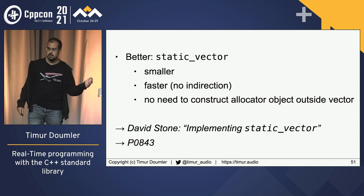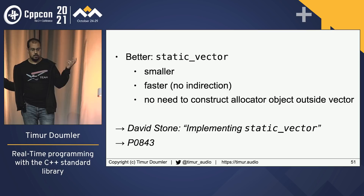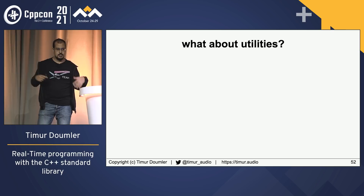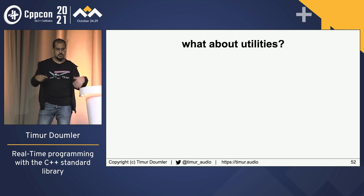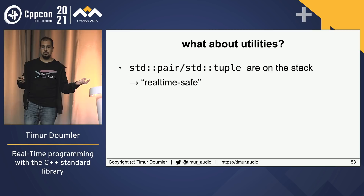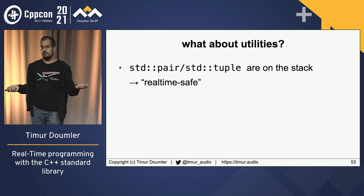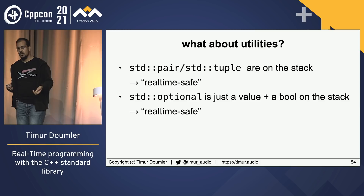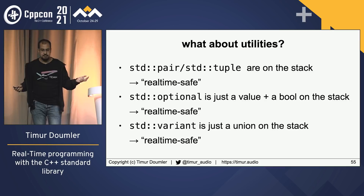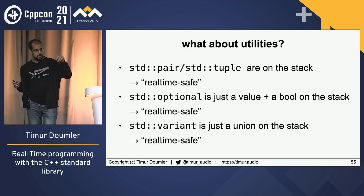The same goes for other containers like map or set — you could construct them with a real-time safe allocator, but there are also things like flat_map which might be a better idea. Let's talk about other standard utilities. std::pair and std::tuple are both on the stack, so they're real-time safe. std::optional is just a value and a bool on the stack — also real-time safe. std::variant is essentially a union on the stack, so it's also real-time safe — but with an interesting nuance.